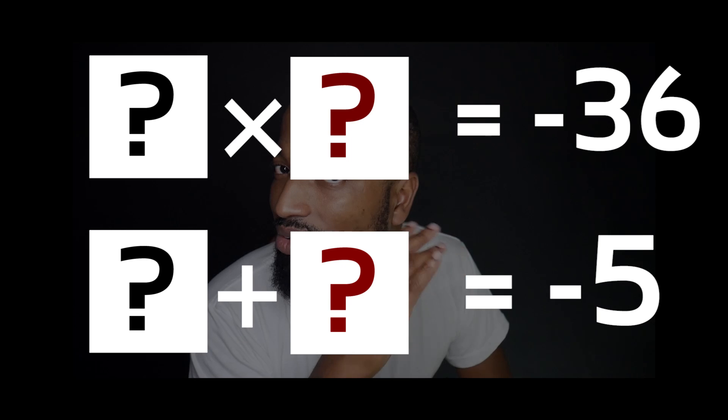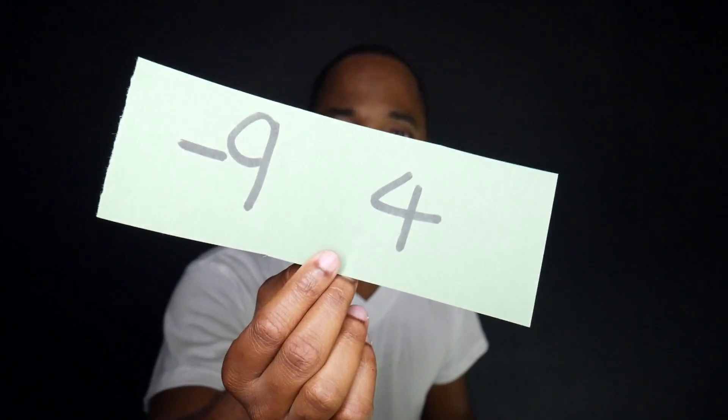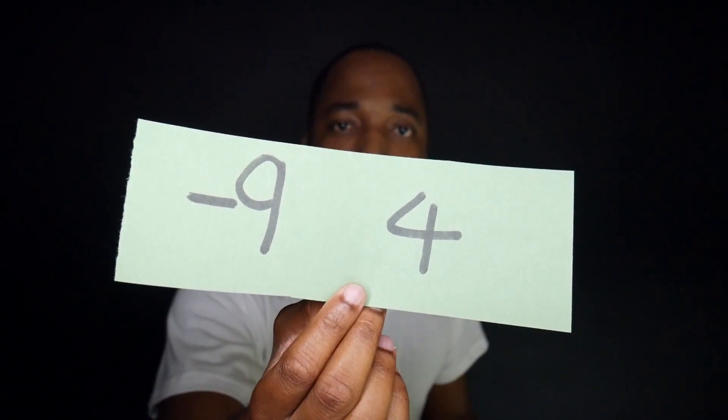We're down to the last two, so these will be a little more challenging. These two numbers multiply to give me negative 36, but when I add them I get negative 5. The answer is negative 9 and 4.